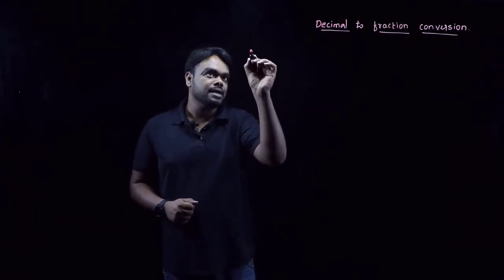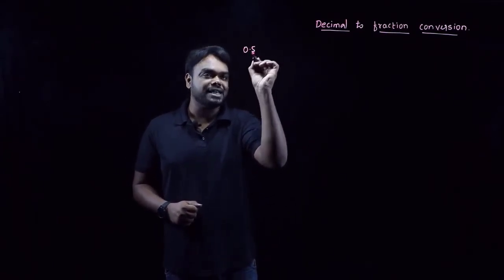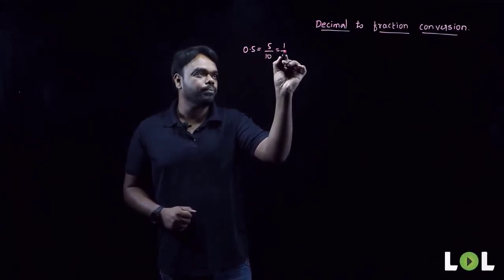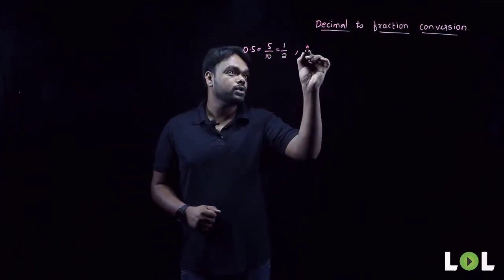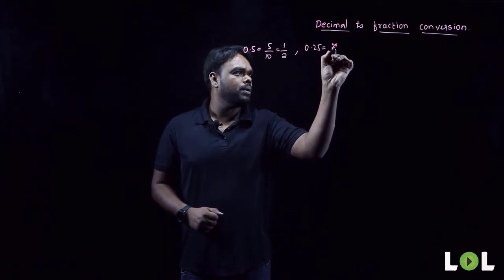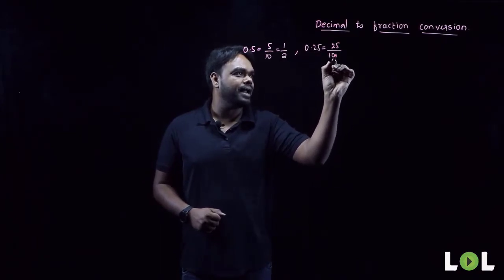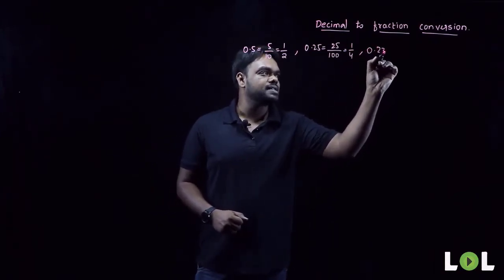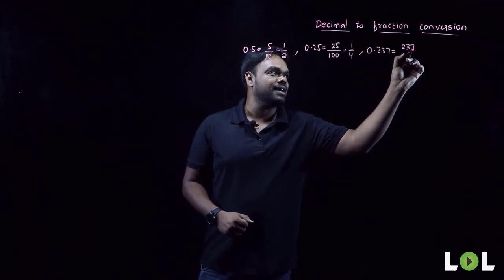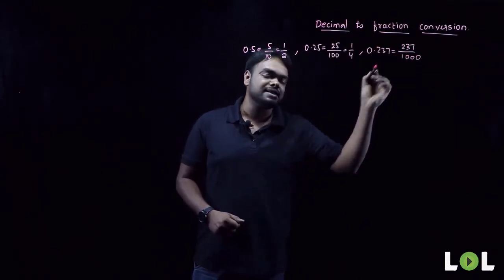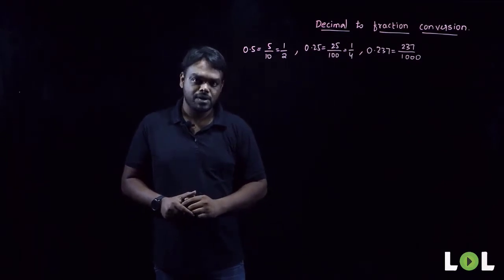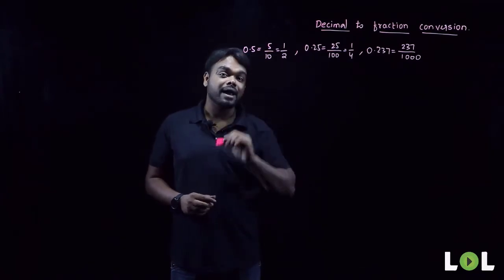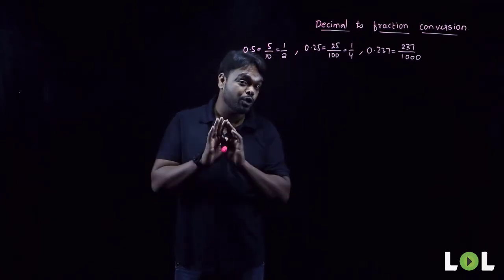How to convert a decimal to a fraction? If I give you 0.5, you can easily convert it by writing 5/10, which is 1/2. If I give you 0.25, you can write it as 25/100, which is 1/4. Even 0.237 can be written as 237/1000, because there are three digits after the decimal point. These are non-recurring and terminating decimals — we have no problem with them.